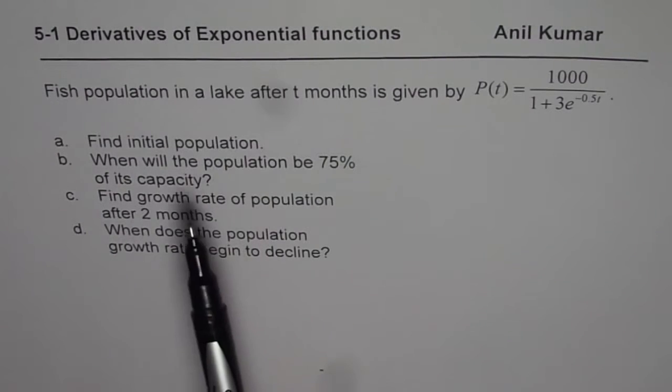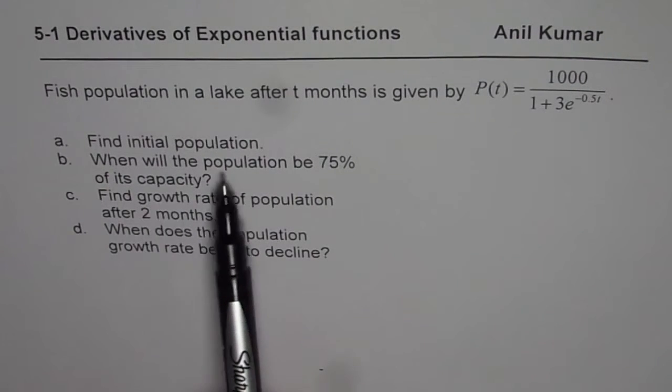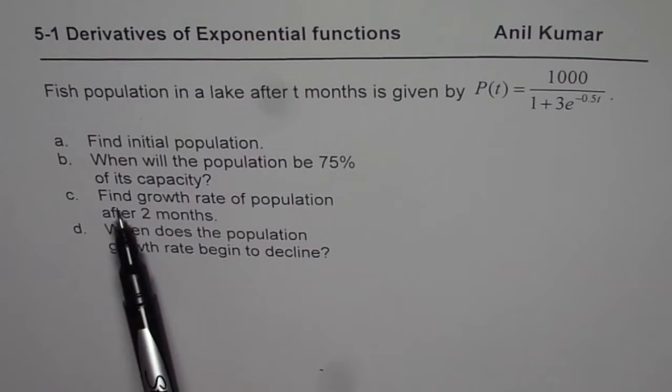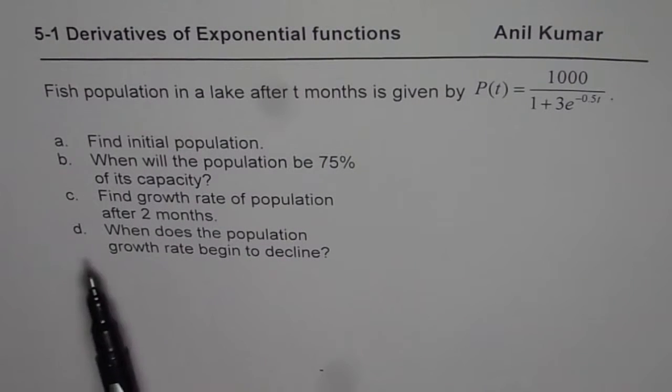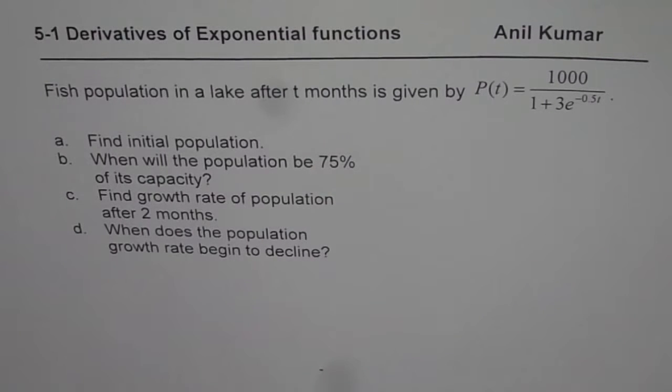Four parts of this question are: find initial population; when will the population be 75% of its capacity; find growth rate of the population after 2 months; when does the population growth rate begin to decline?